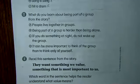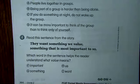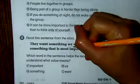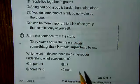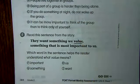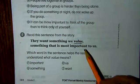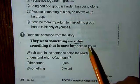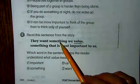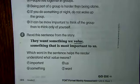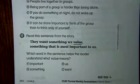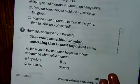Number six: read this sentence — 'They want something we value, something that is most important to us.' Which word in the sentence helps the reader understand what 'value' means? This is another context clues question. We know the girl valued her doll. Do you think the word that helps us understand 'value' would be 'important,' 'something,' 'us,' or 'want'? Think about it — the girl really loved her doll, and that's what she valued, and she was willing to sacrifice it for the good of the people.